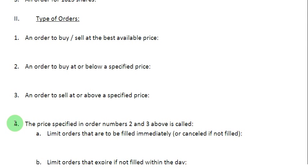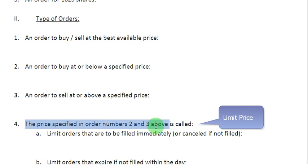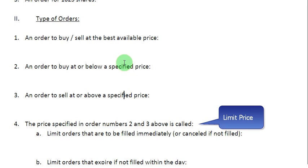Item number 4 asks what the price specified in order numbers 2 and 3 above is called. Since this price is related to a limit order, we give it the name limit price.